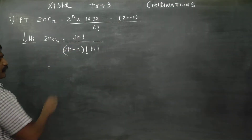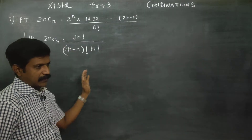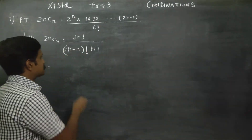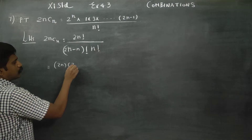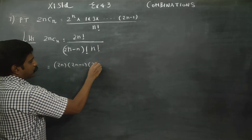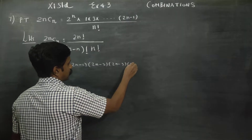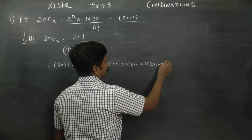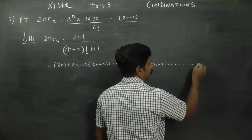What is the meaning of factorial? It starts from 2N and ends in 1, in descending order: 2N, 2N minus 1, 2N minus 2, 2N minus 3, 2N minus 4, 2N minus 5, dot dot dot, right?